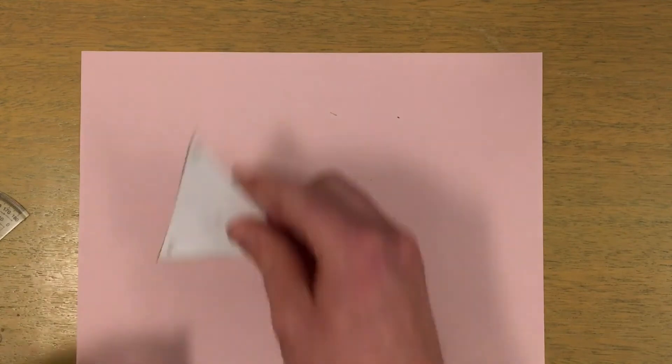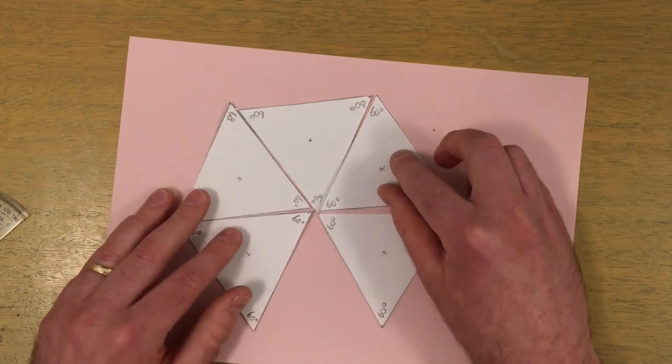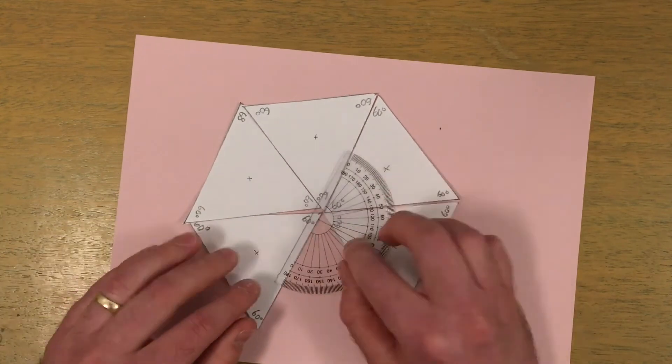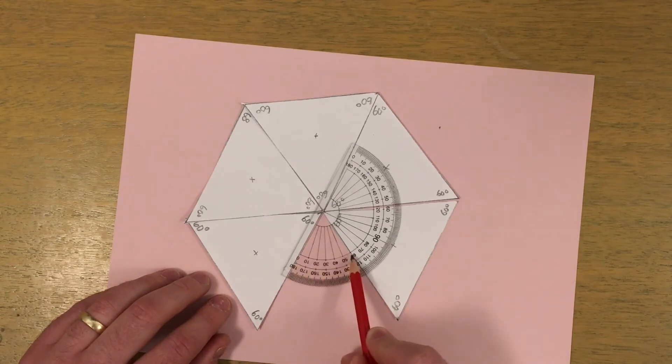Tessellate your polygons on a contrasting piece of paper and glue them down. Write reasons why or why not you think your regular polygons tessellate. Would any gaps fit another polygon?